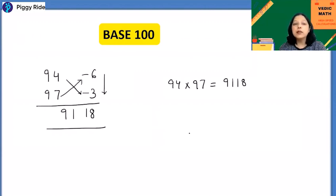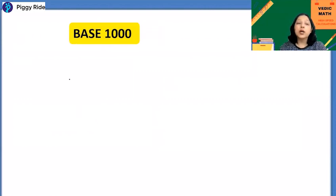So whenever you get any two numbers close to any base you can easily apply this concept to get the answer quickly. Let's take another base now. Base 1000. Let's take few examples. Suppose you want to multiply 992 with 991.